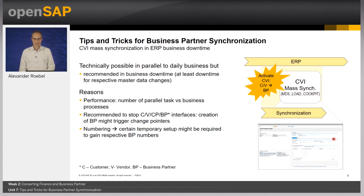Usually, there are interfaces that exchange master data. Business partner synchronization could trigger interfaces to create or change master data. As it is a mass processing, this could overload and block these interfaces as all customers and/or vendors are transferred. Stopping these interfaces during business uptime is also not an option, as real changes would not be transferred during this time. The third reason is that we might need to control and adapt certain settings to achieve our number range designs, and there is also an option to suppress several checks for mass synchronization only.